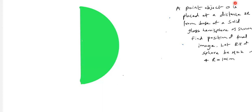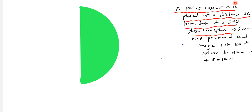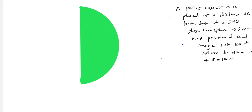Good morning kids. Today's class we'll discuss the refraction of a spherical surface. We have a point object O placed at a distance 2r from the base of a solid glass hemisphere. Find the position of the final image. Let the refractive index of the sphere be mu equal to 2 and radius is 10 centimeters.